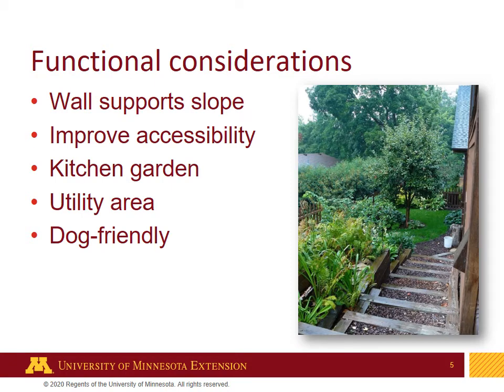From a functional standpoint, our most important consideration was that the wall supports the slope and that we improve accessibility on the stairs so they're safer and require less maintenance. We'd also like a kitchen garden — a garden where we grow herbs and vegetables close to the kitchen door so you can step outside while cooking and pick fresh herbs or vegetables. We also need a utility area with composting, rain harvesting, and a woodpile, and it needs to be dog-friendly.